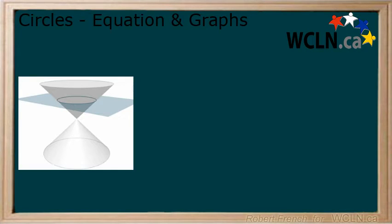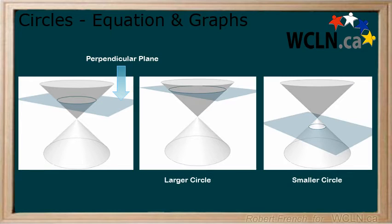First, let's look at how the circle is generated in reference to the double-napped cone. A perpendicular plane anywhere along the double-napped cone will create a circle. As we move the plane vertically, we can see that the size of the circle changes.